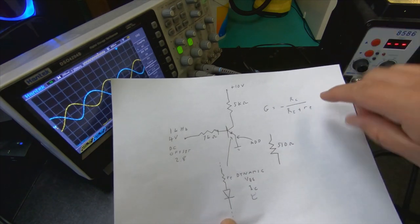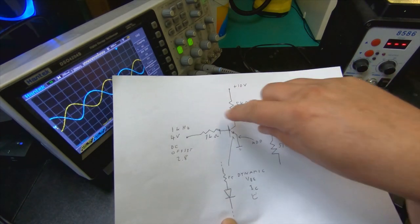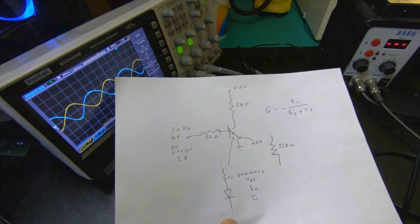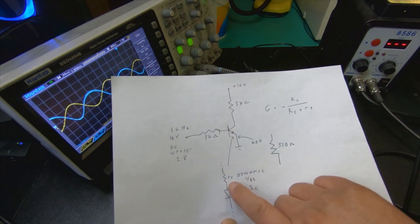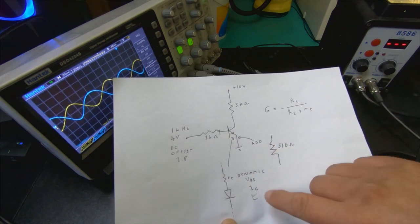So if you look at the gain formula, then the gain is the collector resistance divided by the resistance on the emitter, which is a combination of this varying Re and the emitter resistance.